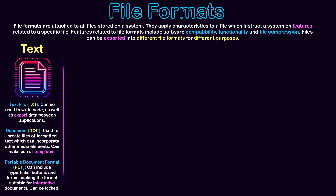First, we'll look at text. The most basic text format is the .txt file, which can be used for writing basic text and notes, but is also used to write code at a basic level, as well as to export data between applications. TXT files are highly compatible, making them a great starting point for data you plan to export elsewhere.